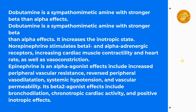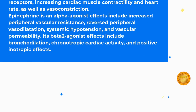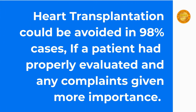Epinephrine's alpha-agonist effects include increased peripheral vascular resistance, reversed peripheral vasodilatation, systemic hypotension, and vascular permeability. Its beta-2 agonist effects include bronchodilation, chronotropic cardiac activity, and positive inotropic effects. Heart transplantation could be avoided in 98% of cases if a patient had been properly evaluated and any complaints given more importance.